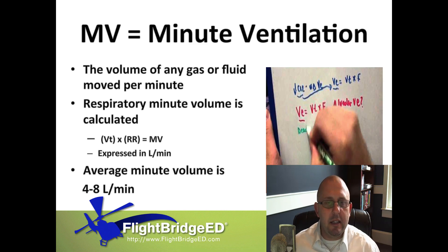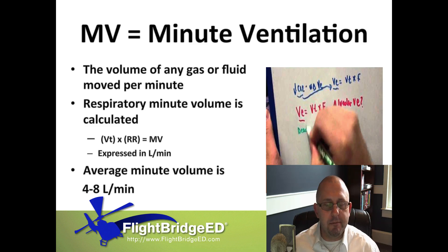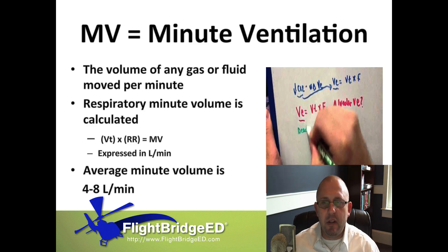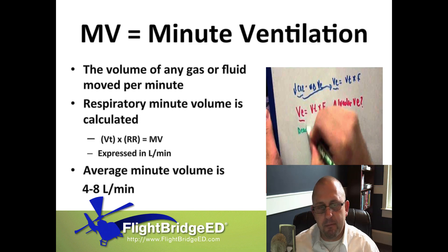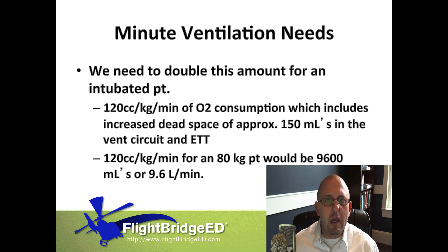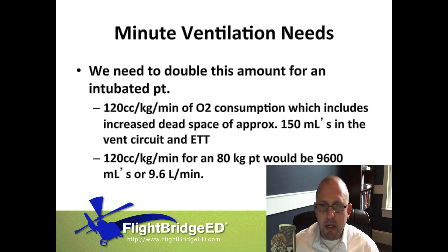That four to eight liters per minute is the amount of cardiac output needed to propel oxygen-rich hemoglobin throughout our body to maintain good homeostasis and provide good ATP synthesis based on aerobic metabolism. We also need the same amount of minute ventilation: four to eight liters per minute. Minute ventilation needs are specific to an intubated patient — we're not talking about a patient without an ET tube in place.